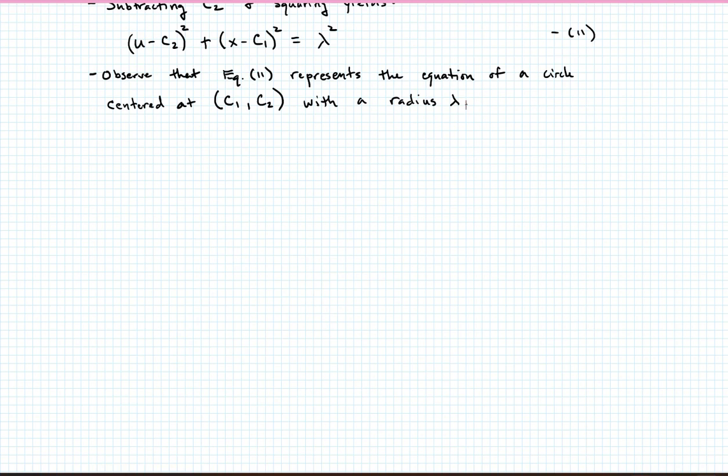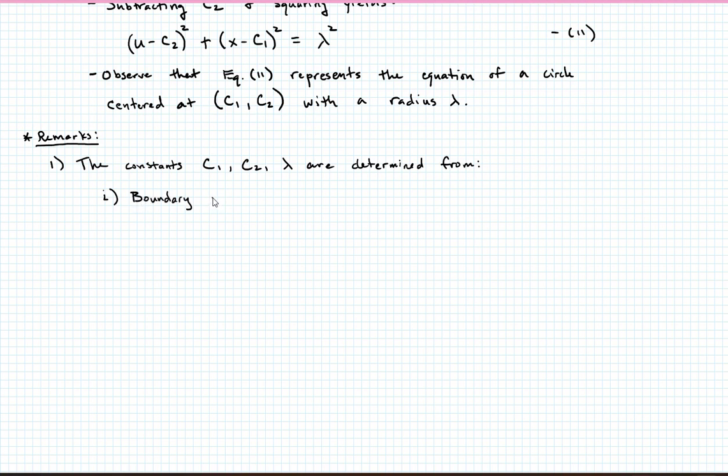So now the question becomes, how do we determine the constants? So let me give you some brief remarks. Number one, the constants c1, c2, and lambda are determined as follows. Number one, the boundary conditions, the boundary points. Right, so we know that u at negative a equals zero. We also know that u at a equals zero. And then that gives, so we have two equations, and now we have three unknowns. That third unknown is solved for by enforcing our constraint equation, which was integral from negative a to a of 1 plus u prime, the quantity squared, to the 1 half dx equals L. That's our third equation. So using these three equations, we can solve for c1, c2, and lambda.